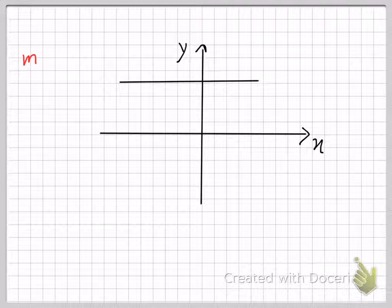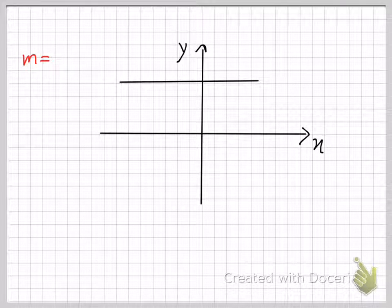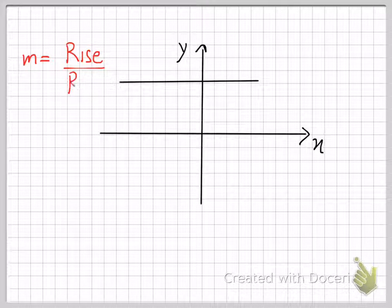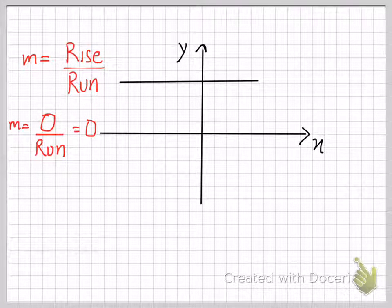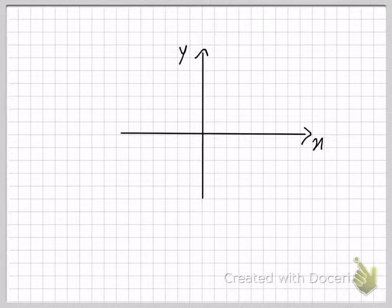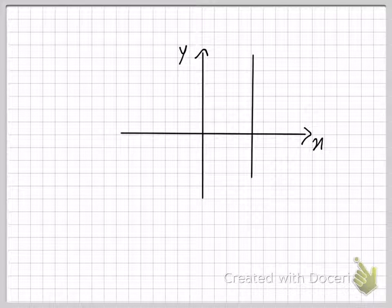This line however will have zero slope. Although there is a change in X, there is absolutely no change in Y. Slope is equal to rise over run, and there is no rise in this line, so the numerator will be equal to 0. Since 0 divided by anything is equal to 0, this line will have a zero slope.